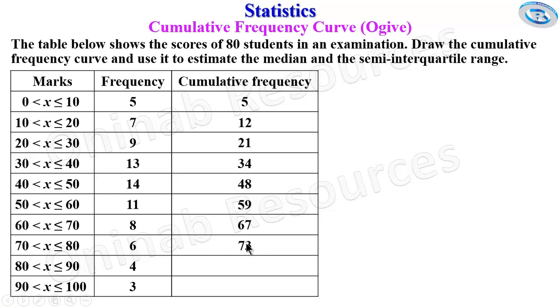67 plus 6, giving us 73. 73 plus 4, giving us 77. And finally, 77 plus 3, giving us 80. So the total here must be the same as the population.